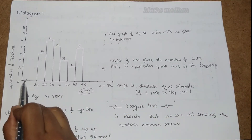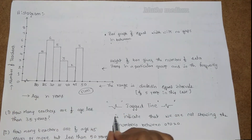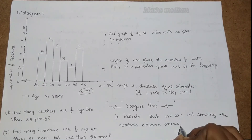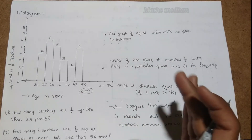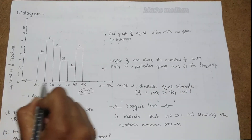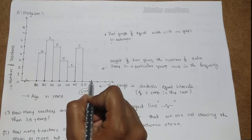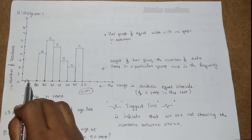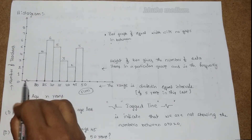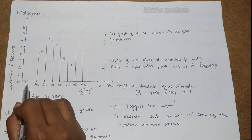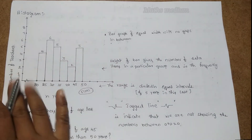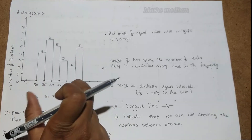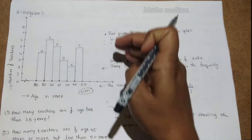Next is the kink or jargon line. This jargon line between the origin and the first value indicates that we are not showing the numbers between 0 and 20. In a bar graph we can take each and every part of the width, but in a histogram we don't need to show from 0 to 20 — the jargon line indicates those numbers are not shown.